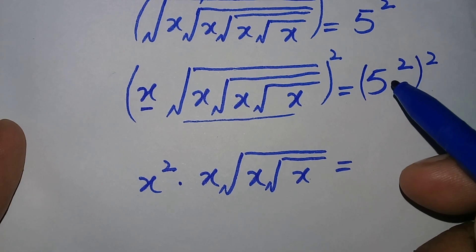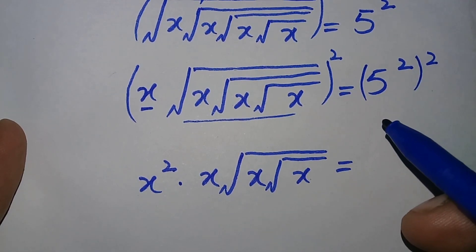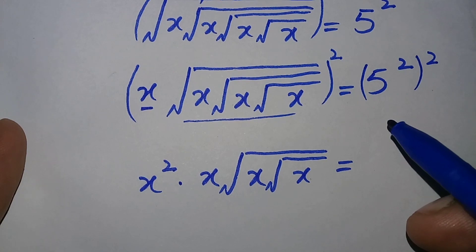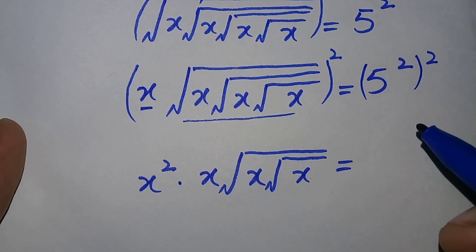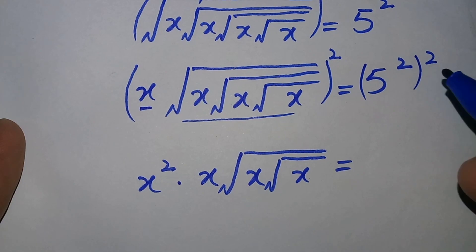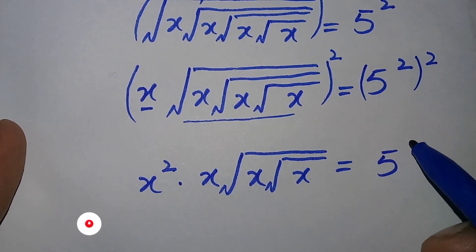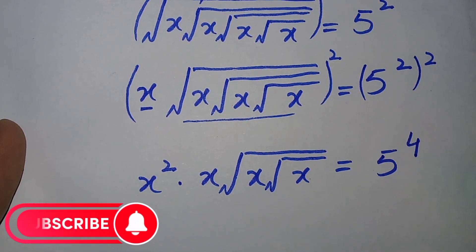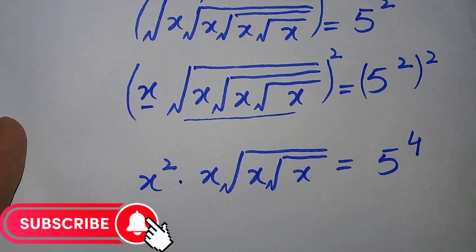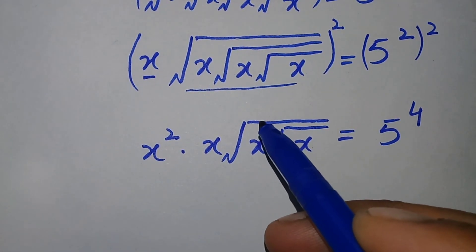On the right hand side we will use the exponent formula: a power m whole power n is equal to a power m times n. So it will become 5 raised to power 4. In the next step we will again take the square on both sides to eliminate this square root.